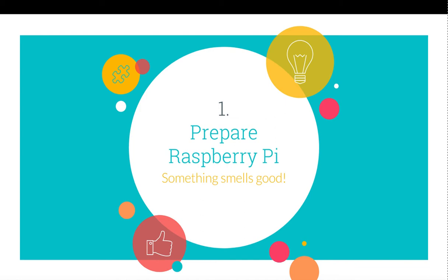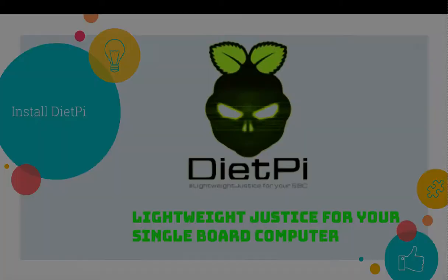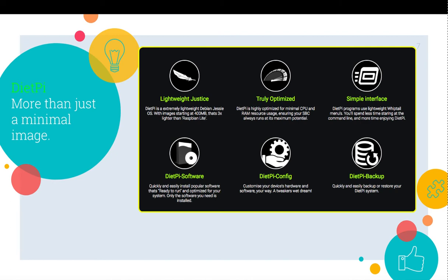First step: prepare Raspberry Pi. You can pick a Raspberry Pi Zero Wireless for $10 or a Raspberry Pi 3 for $35. It is up to you. You decide what kind of device you want, just so it can run some sort of Linux type distribution and so that you are able to SSH into that device. What next? Well, I suggest using DietPi. DietPi touts itself as a lightweight solution for your single board computer. They say they're more than just a minimal image, and I can testify to this — they are truly optimized.